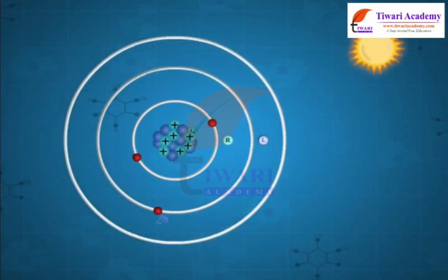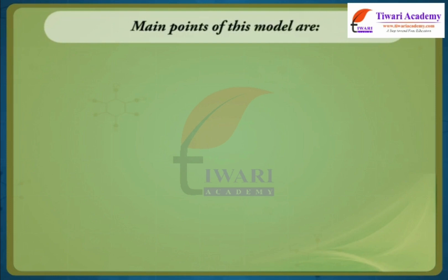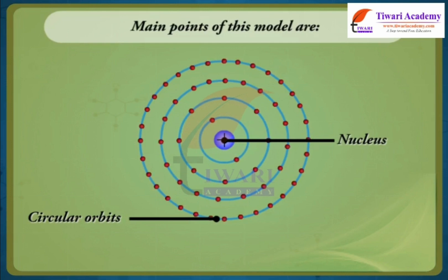Bohr's Model of Atom based upon quantum theory of radiations. The main points of this model are: The electrons in an atom revolve around the nucleus only in certain selected circular orbits. These orbits are associated with definite energies and are called energy shells or energy levels. These are numbered as 1, 2, 3, 4, etc. or designated as K, L, M, N, etc. shells.